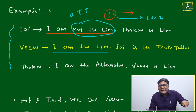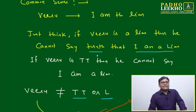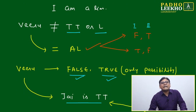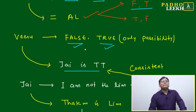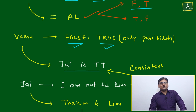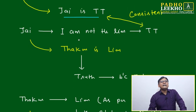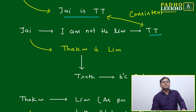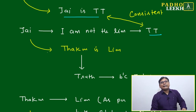A liar cannot say 'I am a liar,' but a truth teller can say 'I am a truth teller.' So Jay is a truth teller — this is consistent with Jay's statement and also with Viru's second statement. Therefore, Viru's pattern is false-true, and Jay is confirmed as the truth teller.